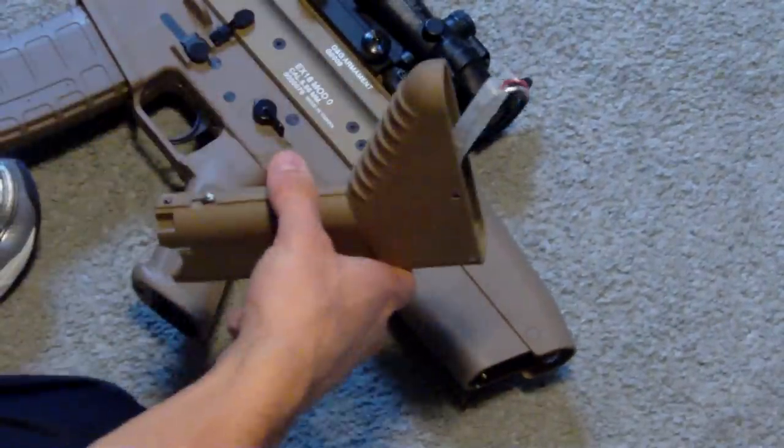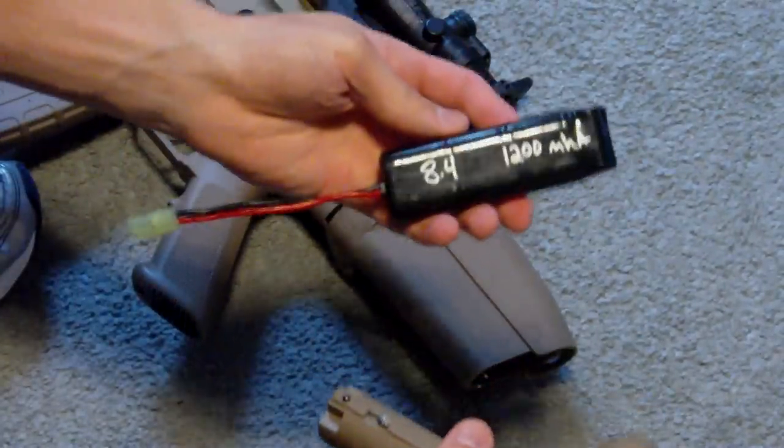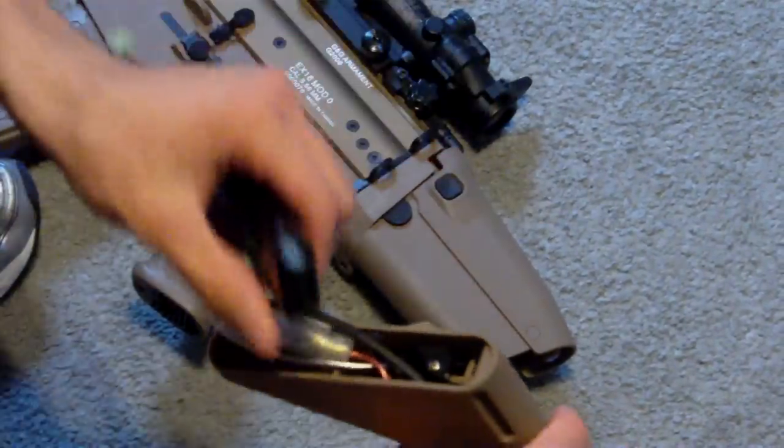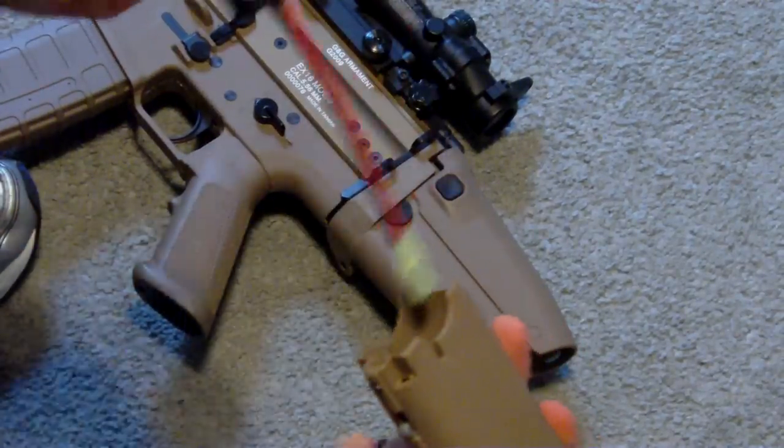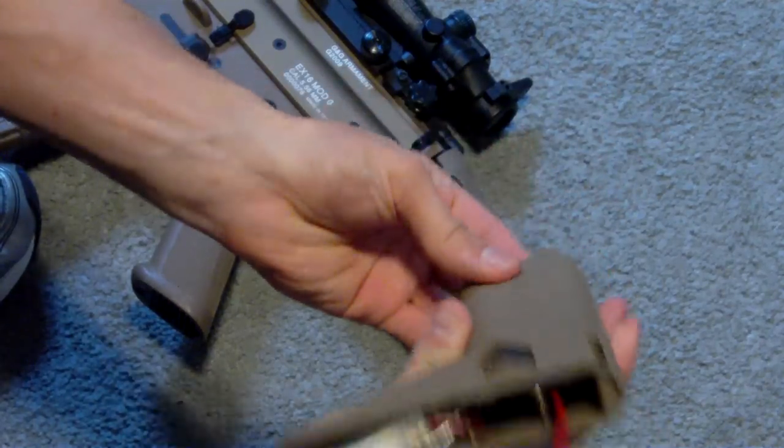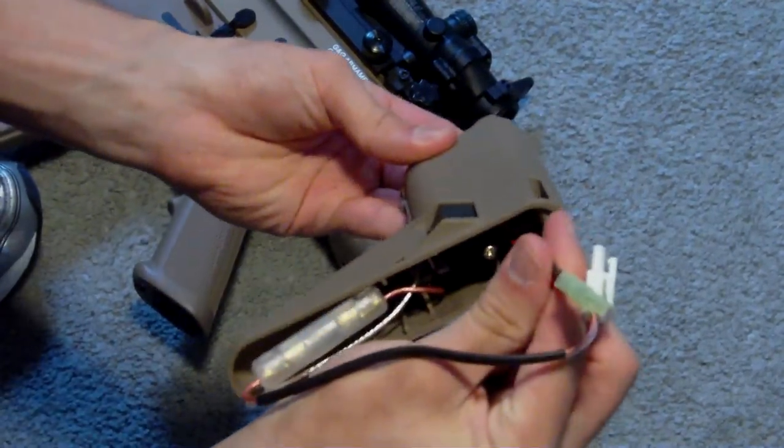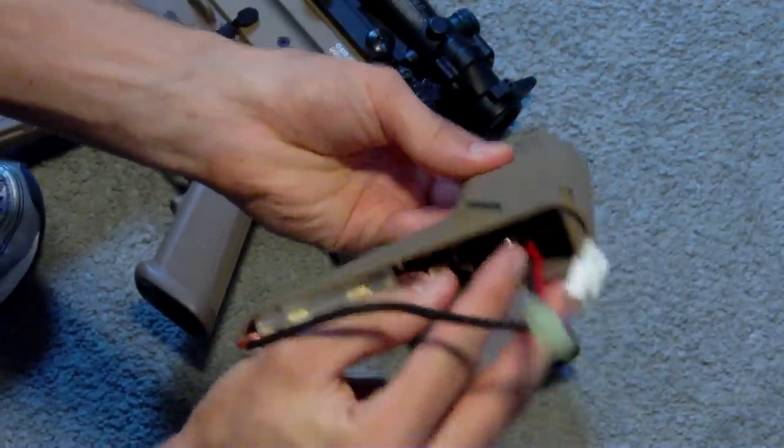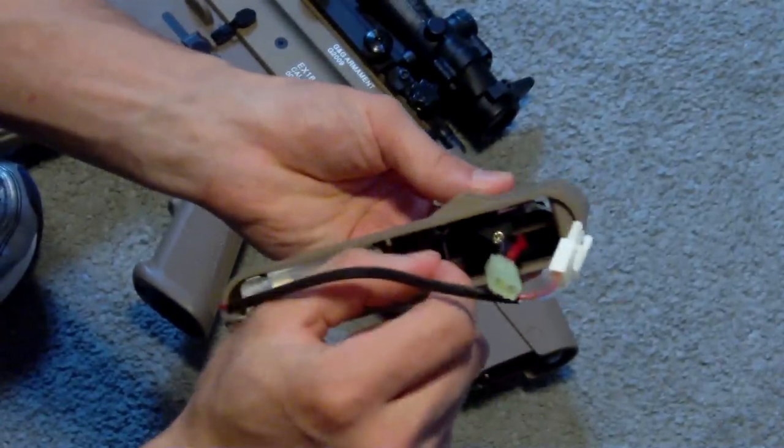Now, take the battery. This is an 8.4 volt. Insert it into the stock, like so. And, the connector should be coming out of one of these holes in here.